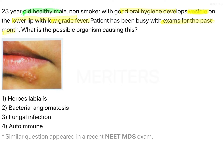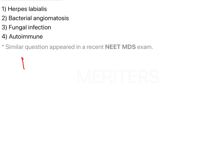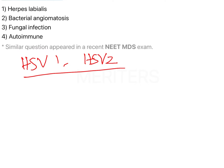We have two types of herpes simplex lesions. You need to think of HSV-1 and HSV-2. We will read the more features about HSV-1, then figure out about the lesions.